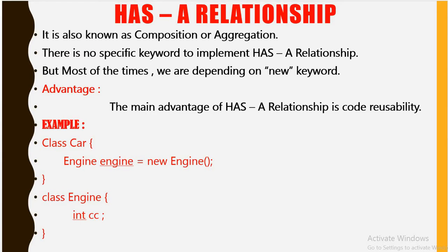Most of the time we depend on the new keyword to implement it. The main advantage of the has-a relationship is code reusability. For example, we have declared one class Car, and class Car is using an Engine class object and its reference variable, which increases the dependency of one class upon another.